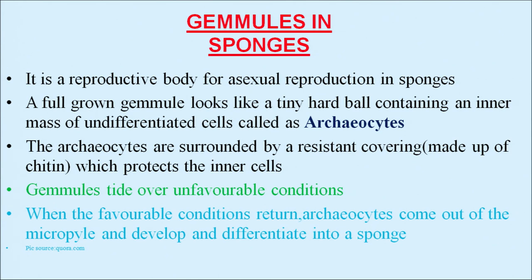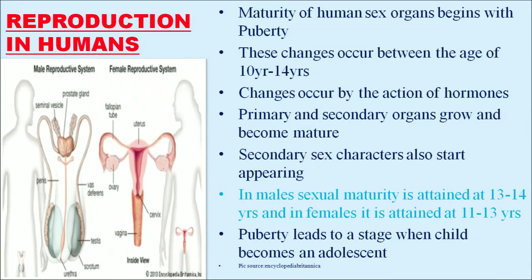Now, reproduction in humans. Maturity of human sex organs begins with puberty. These changes occur between the ages of 10 to 14 years and occur by the action of hormones. Primary and secondary organs grow and become mature, and secondary sex characters also start appearing.